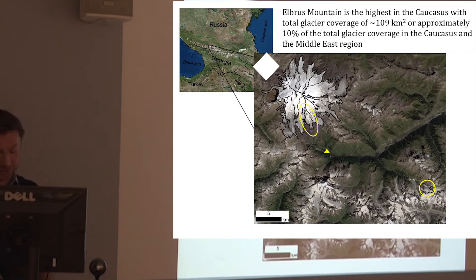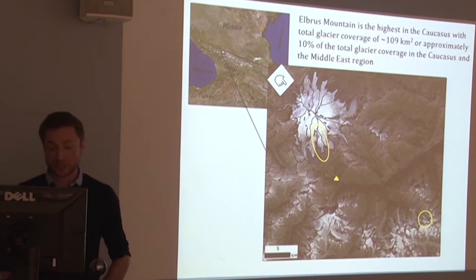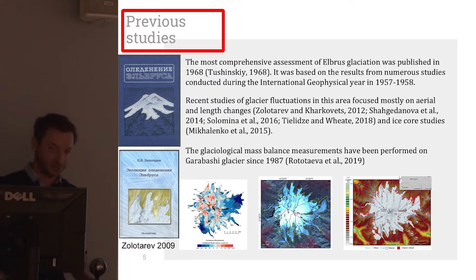Of course, all the agriculture in the region depends on this water. I also want to stress that the glacier with the longest mass balance measurements is located here, and there is another one — Garabashi Glacier — just at Elbrus Mountain. Of course, this mountain was studied before.